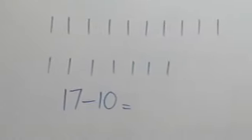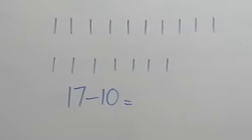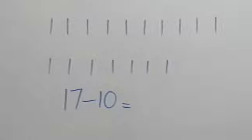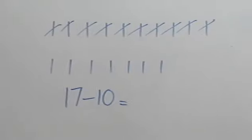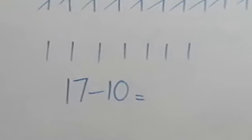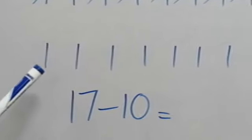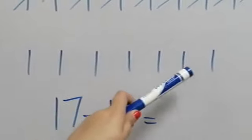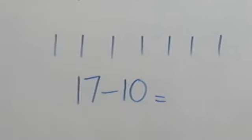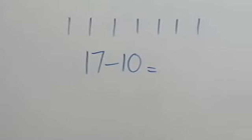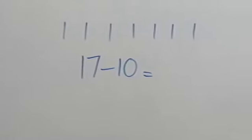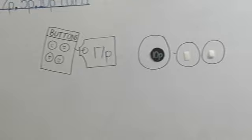We can draw 17 lines on the board. Ab hum kya karenge — in 17 lines mein 10 lines ko cross kar denge. How many are left? Ab kitni lines baki reh gayi? Let's count: 1, 2, 3, 4, 5, 6, 7. So 17 minus 10 equals 7. We need 7 paisa more for buying this pack of buttons.